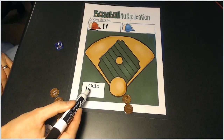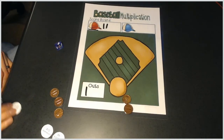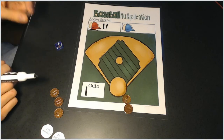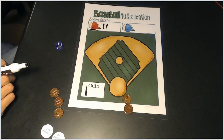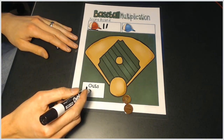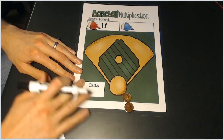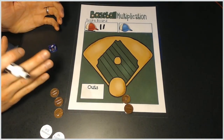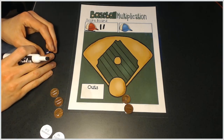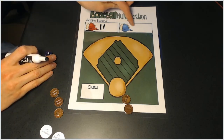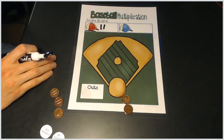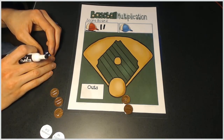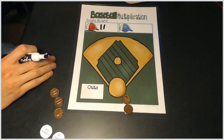After I get three outs — either by getting strikeouts or by missing three problems — we're going to erase the outs and Hayden and I are going to switch jobs. We'll play until we run out of time or decide to play something else, as long as both of us have had a chance to go. Hope you enjoyed playing this game! Bye.